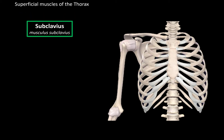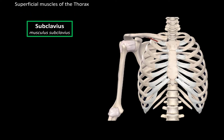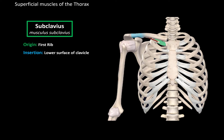So the subclavius muscle is located here — it's subclavius, so it's under the clavicle. It originates at the first rib, as you see here, and it inserts at the lower surface of the clavicle. When this muscle contracts, it stabilizes the clavicle by pulling it downwards.